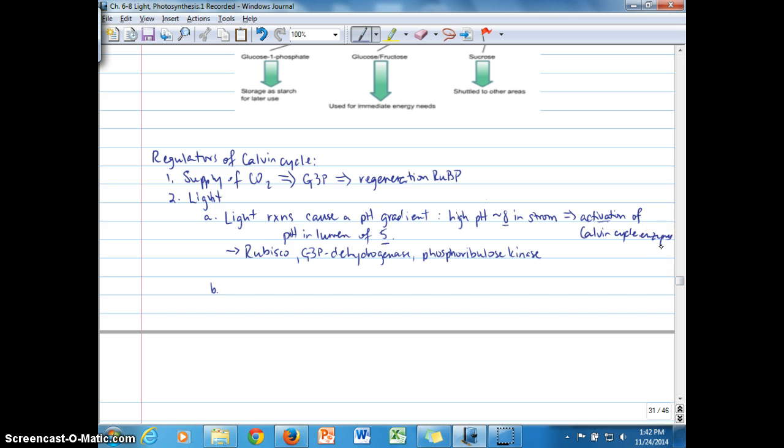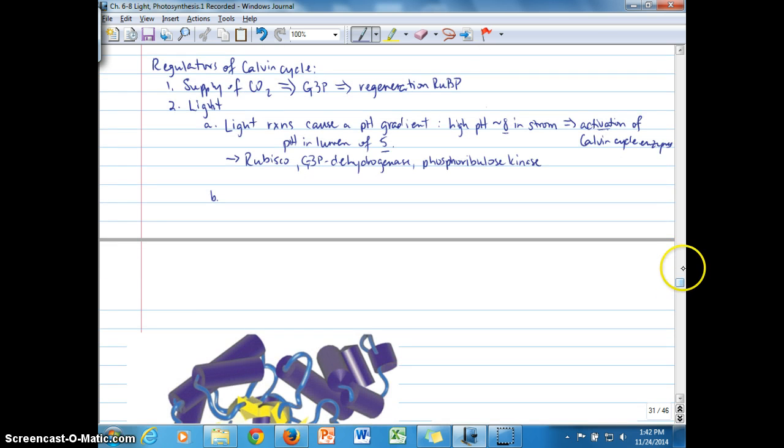So the functioning of the light reactions results in a pH in the stroma that activates those enzymes. And the enzymes that we're looking at specifically activated by that pH of 8 in the stroma are rubisco, G3P dehydrogenase, and phosphoribulokinase. So now we're at the point where we can see what happens as a result of this pH gradient.